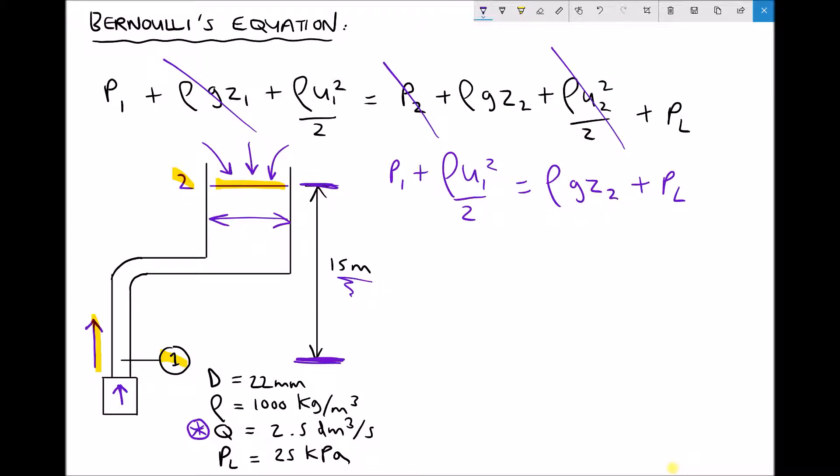Now in this example we're going to be calculating P1. We want to know the pressure P1 measured on the gauge. So the first thing to do is to rearrange our Bernoulli's equation. And Bernoulli's equation is going to become P1 equals rho gz2 plus the pressure loss. And to get P1 on its own all I'm doing is subtracting this term here from each side. So minus rho u1 squared over 2.